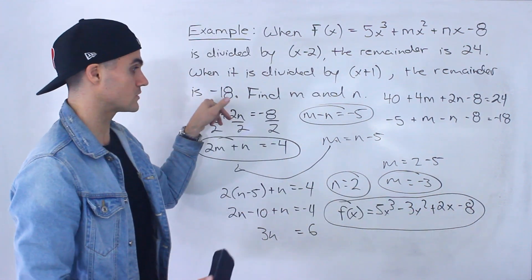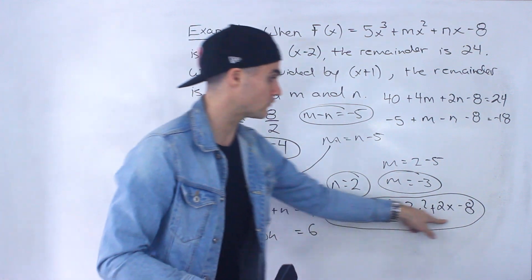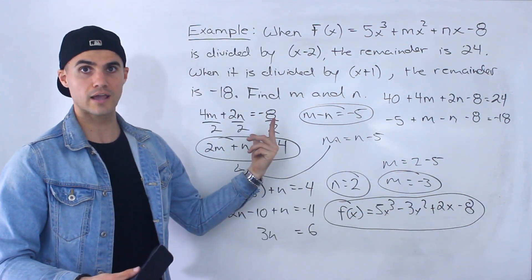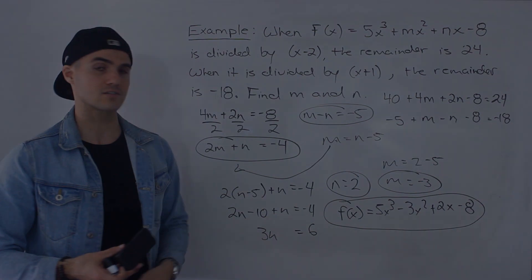And then we said f(-1) has to equal negative 18. You plug in negative 1 and you would see that you do get negative 18. So that's how you could check your answer quickly.